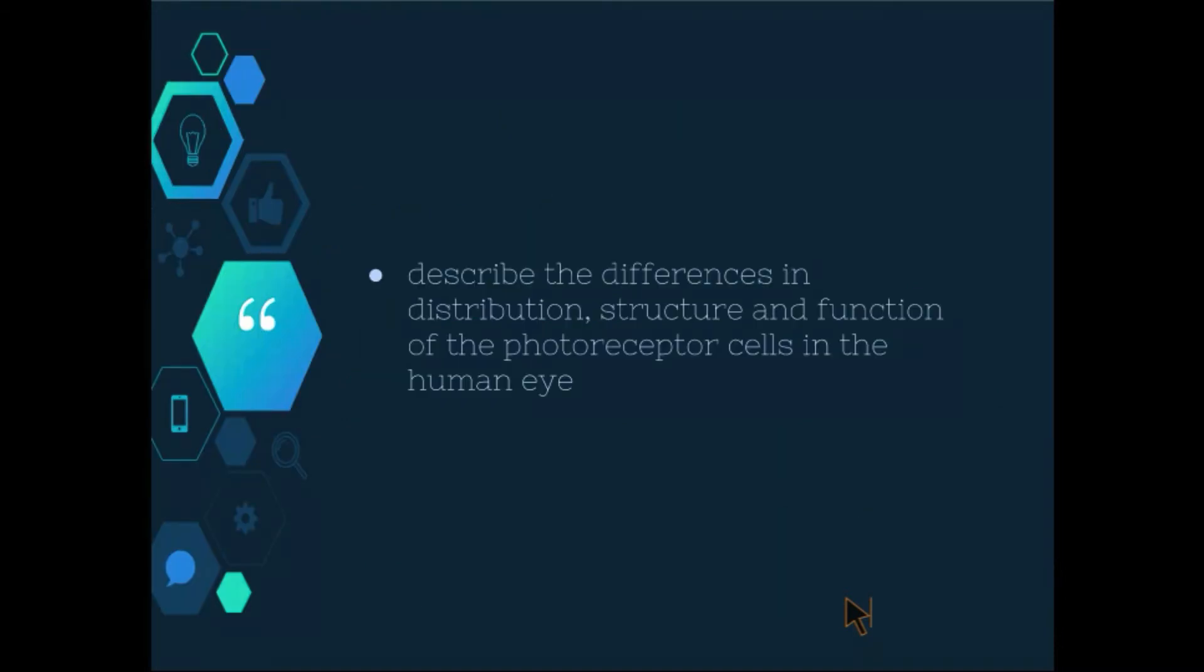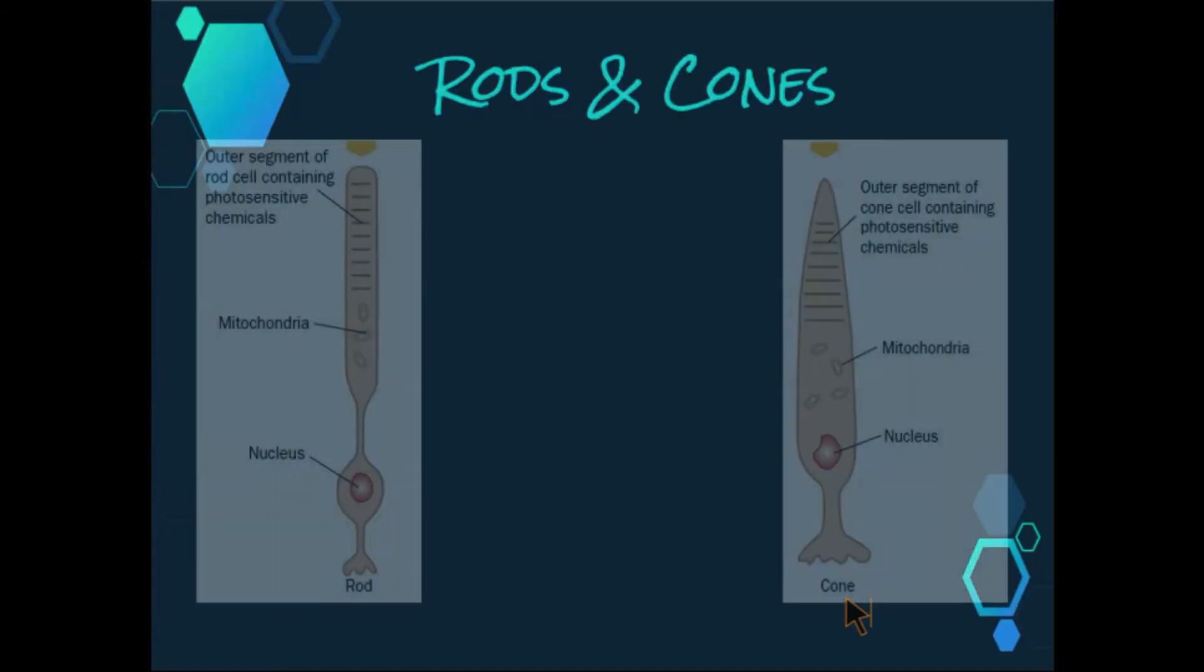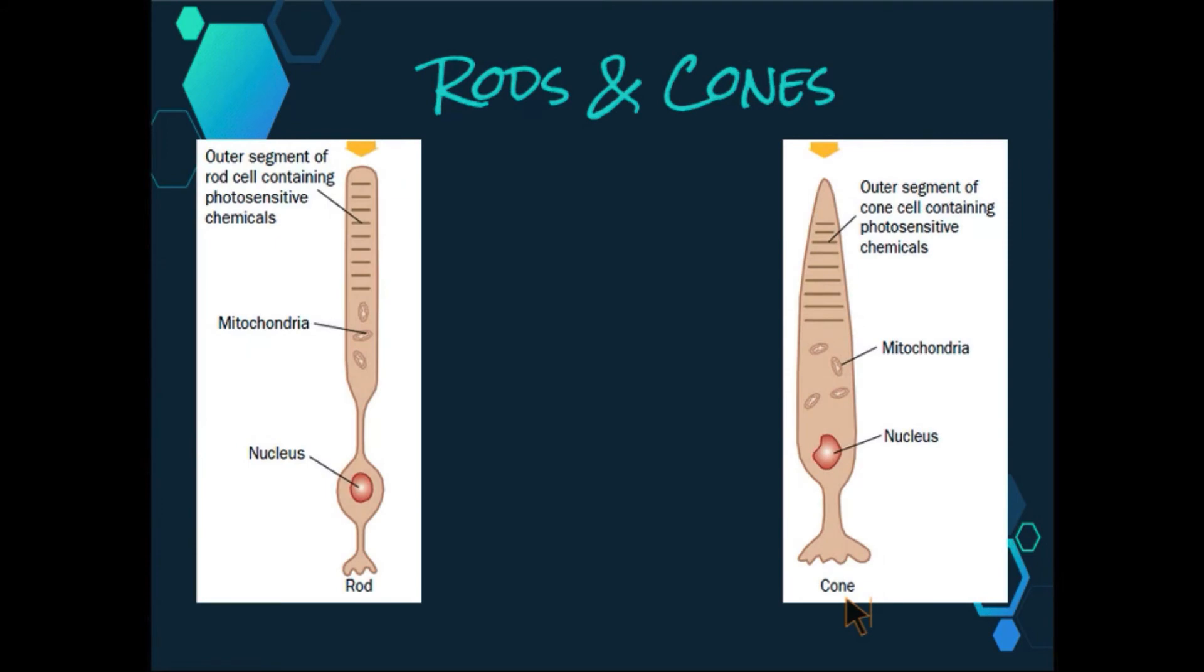So the next dot point that we need to look at is describe the differences in distribution, structure and function of the photoreceptor cells in the eye. So there's three things that we need to look at here for both of the types of photoreceptors. So we're going to start by looking at structure, as that's probably the easiest to be able to visually see.